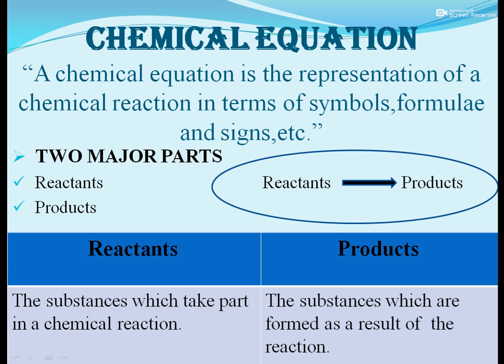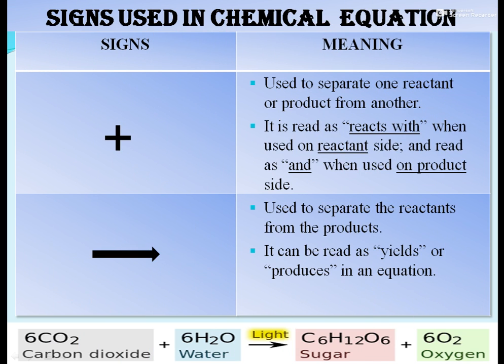A chemical equation has two major parts: reactants and products. Reactants are written on the left hand side, products are written on the right hand side. Reactants are the substances which take part in a chemical reaction, while products are the substances which are formed as a result of the reaction.